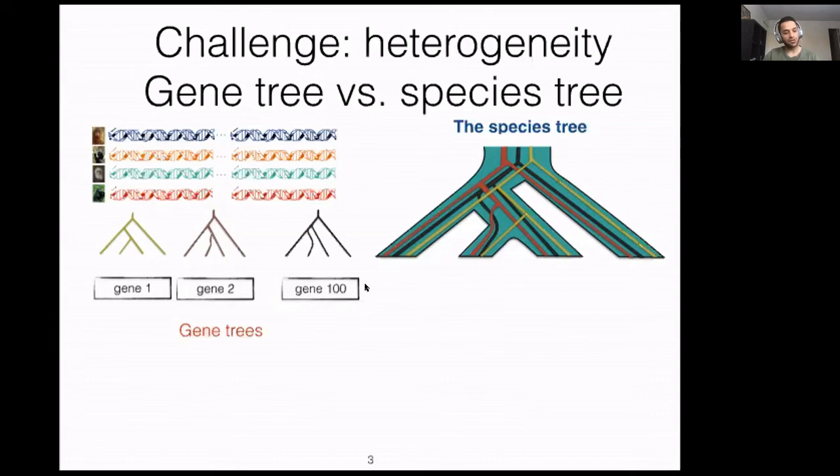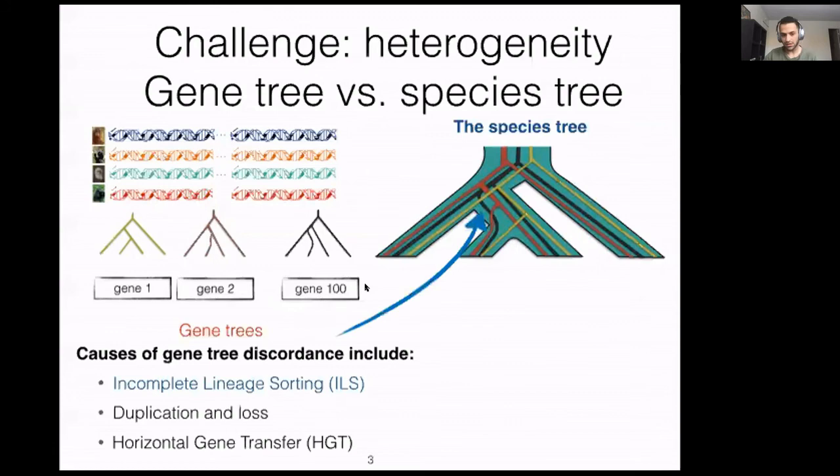The biological differences are caused by real biological processes like incomplete lineage sorting, duplication and loss, and horizontal gene transfer. For the purpose of this talk, I'm going to focus on incomplete lineage sorting and talk about it in my future slides, but I'm not going to talk about the other two.